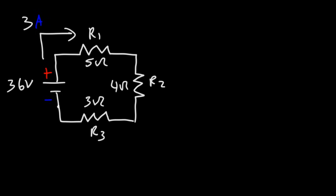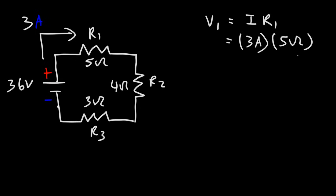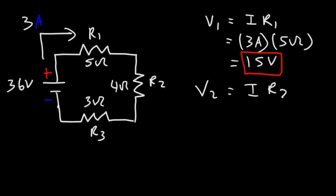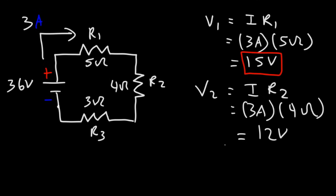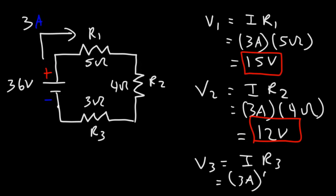Now that we have the current, we can calculate the voltage drop across each resistor. V1 is I times R1: 3 amps times 5 ohms gives a voltage drop of 15 volts. V2 is I times R2: 3 amps times 4 ohms gives 12 volts. V3 is I times R3: 3 times 3 gives 9 volts.